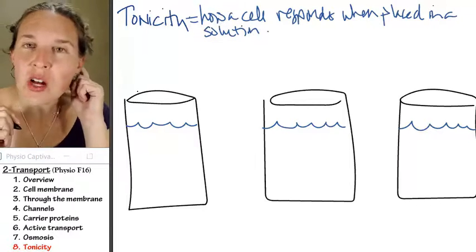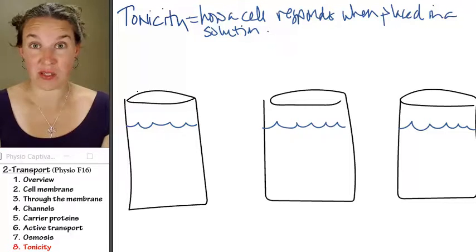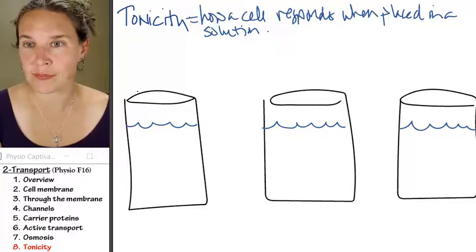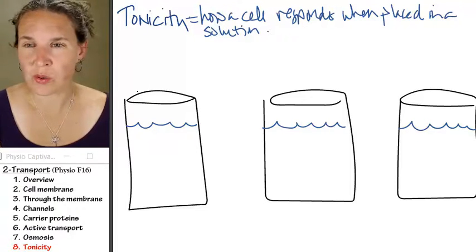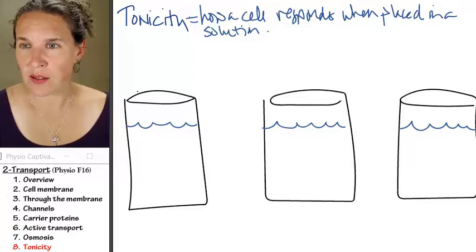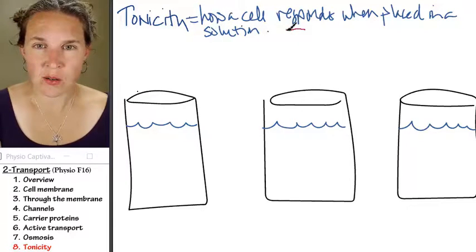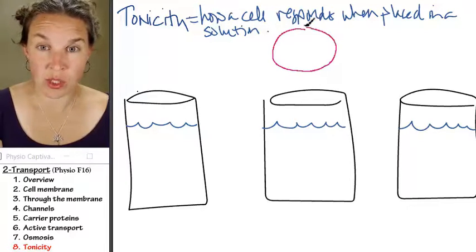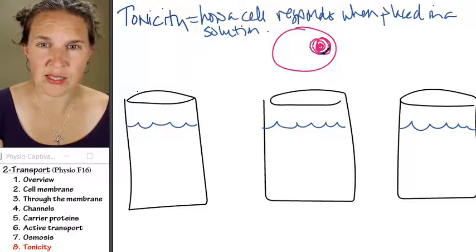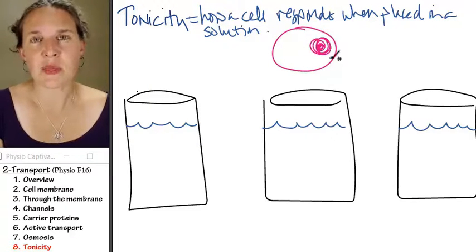And first of all, there are some things that you need to think about. Here's Joe, Joe the cell, because all cells are named Joe. Here's Joe's nucleus. This is Joe's cytoplasm.